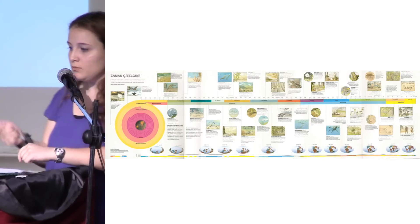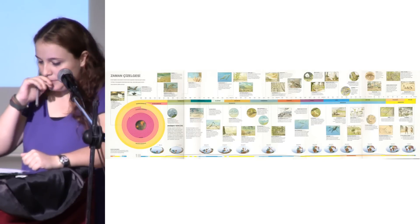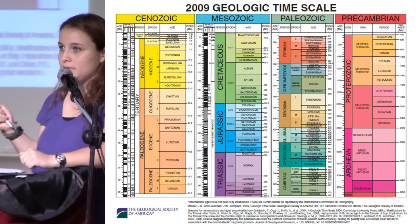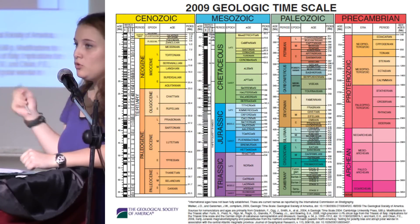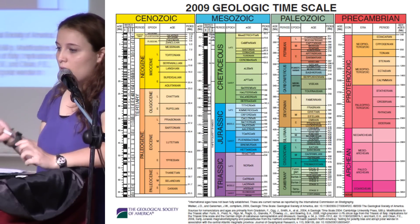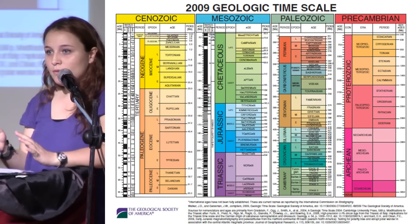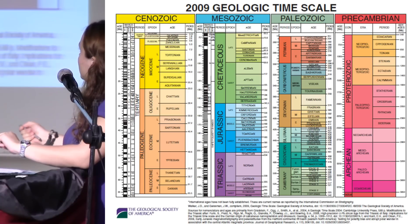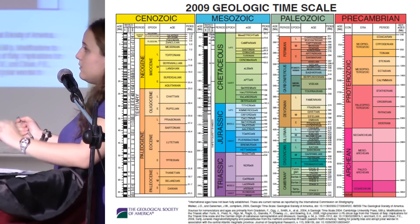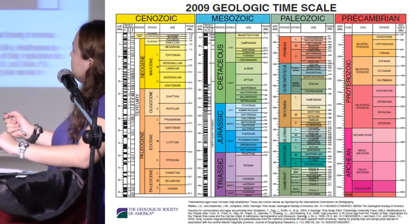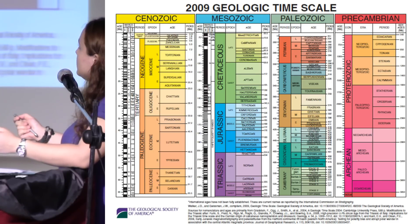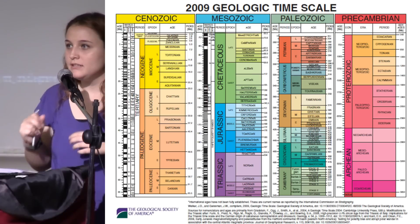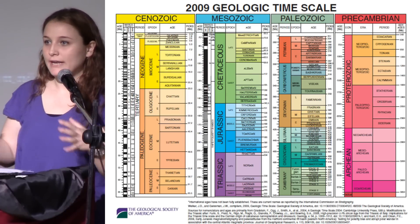Sunumun ilerleyen kısmında bu tablo üzerinden gideceğim ve örneklerini göstereceğim. Jeolojik tam zaman çizelgesine bakacak olursak bu tamamen 4.5 milyar yıllık bir zamanı kapsıyor. İki ana dönemden oluşuyor: Prekambriyen dönemi ve Fanerozeik dönem. Prekambriyen dönemi 542 milyon yıl öncesine kadar uzanıyor. Kalan 542 milyon yıllık dönem Fanerozeik dönem olarak biliniyor; şu an yaşadığımız dönem ve insan oluşumu da sadece bu dönemde görülüyor.